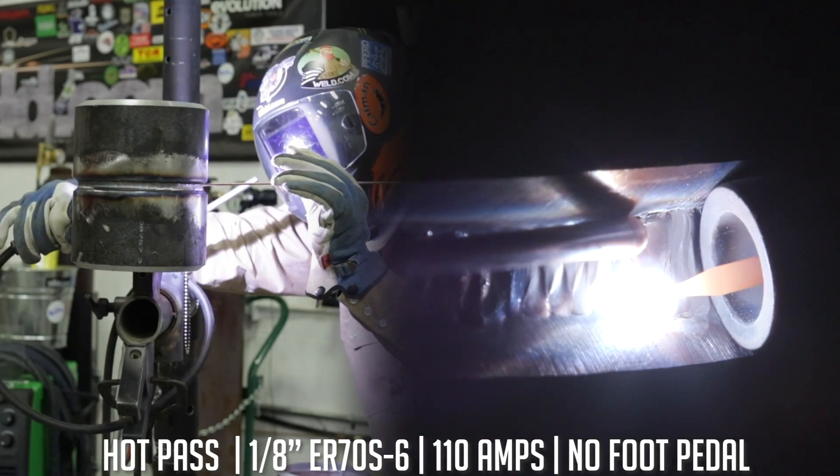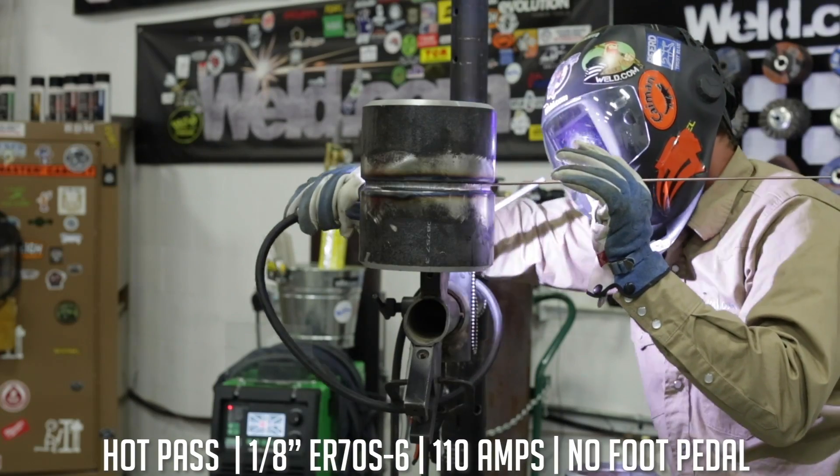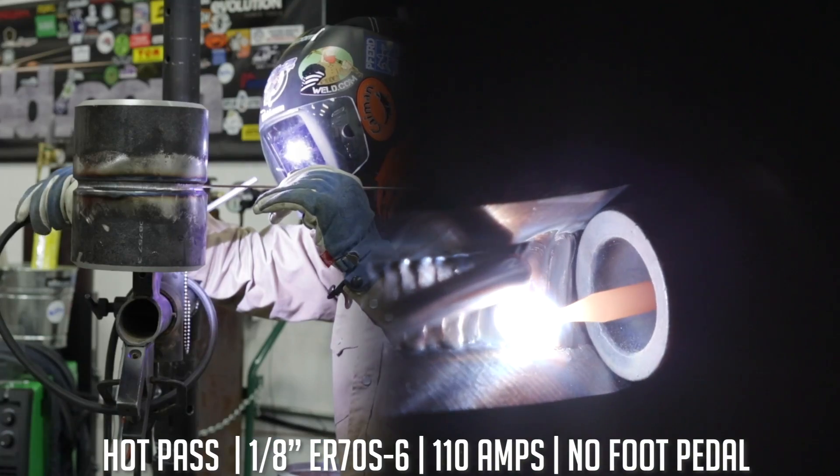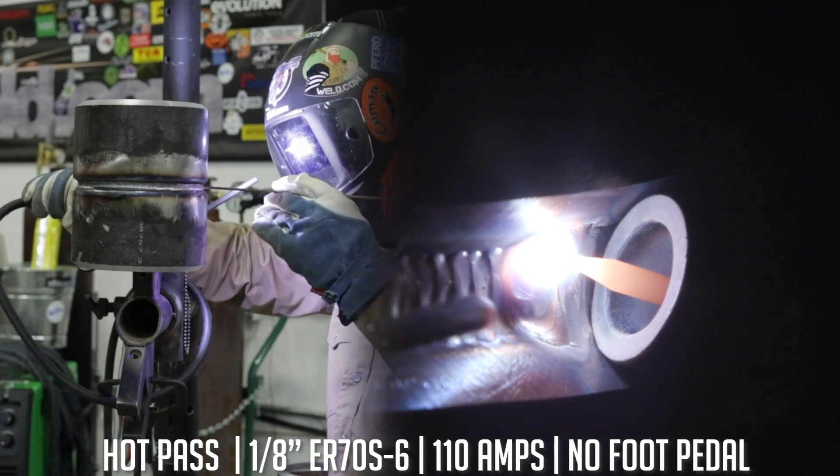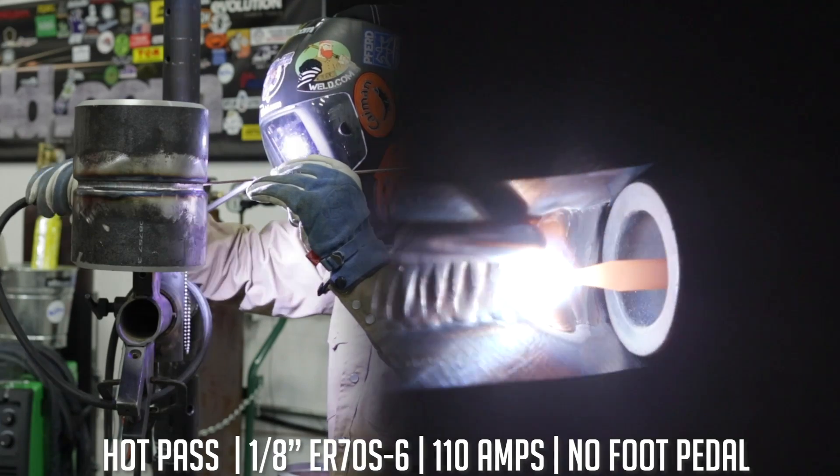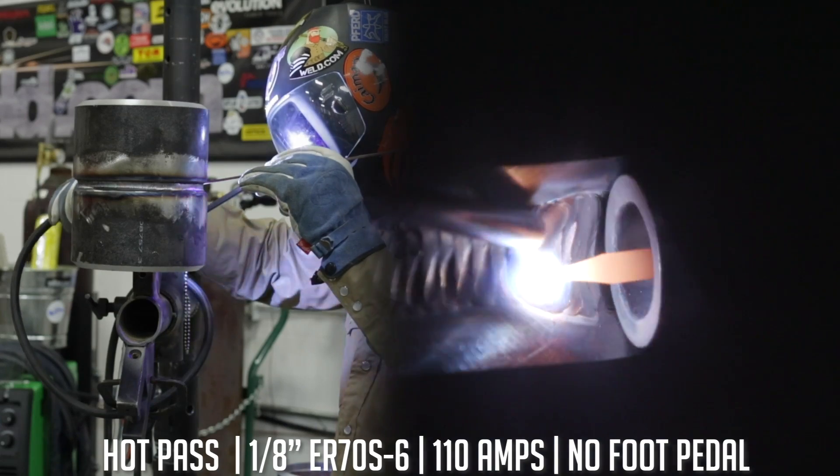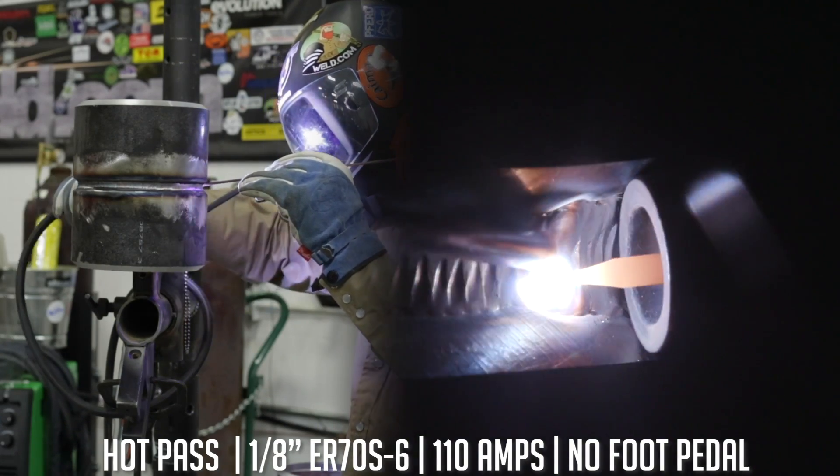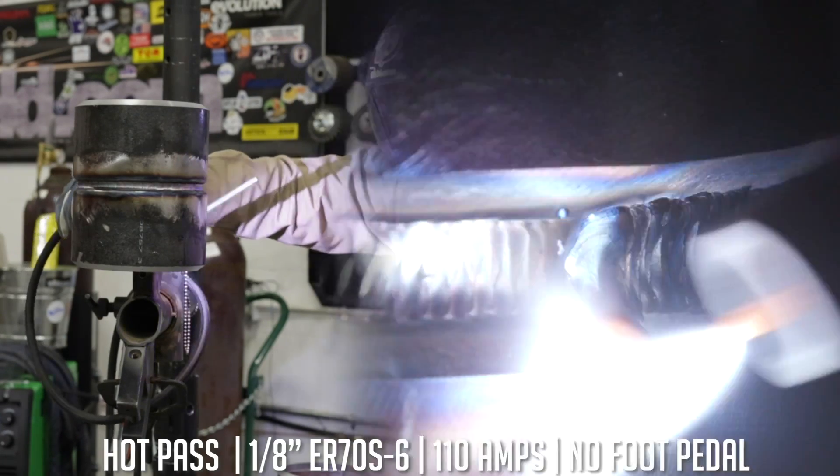You just weld that filler wire up there and it ain't going to move. Just make sure you're pausing on them sides. You go fast to the middle, pause on the sides. Your weld is going to be a little concave in the middle, flat to concave. That's normal. Alright. We're going to go ahead and stop and look at it.